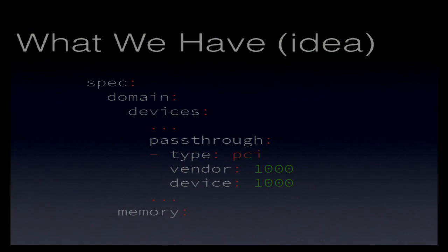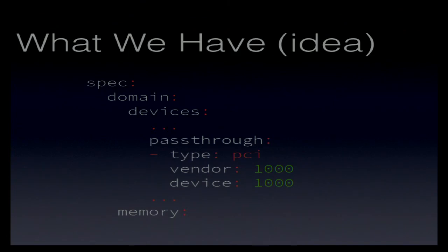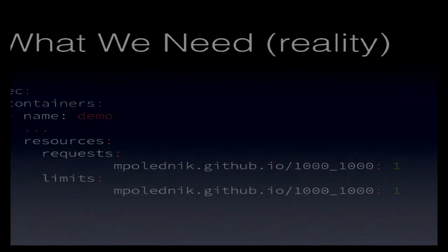On scheduler integration and live migration: the scheduler integration required exactly zero lines of code from me. The Kubernetes scheduler already tracks resources — the node exposes the resource, the pod requires the resource, and the scheduler finds nodes where the resources are available. As for live migration: the answer is it doesn't work with device assignment. That's a fundamental limitation.